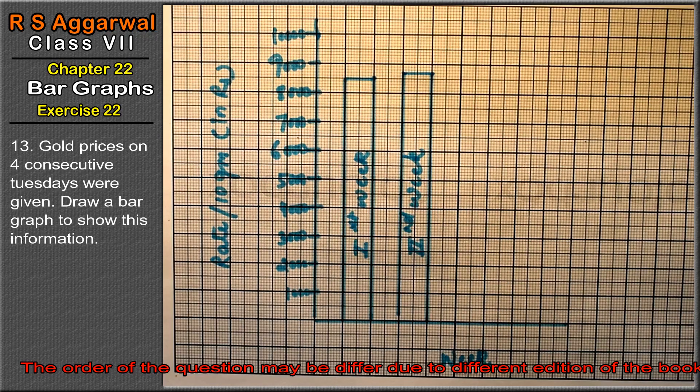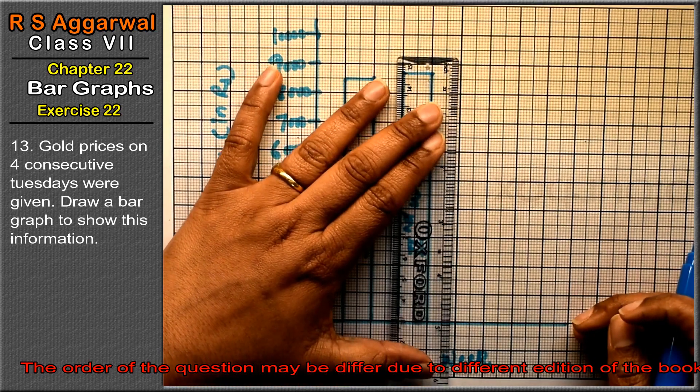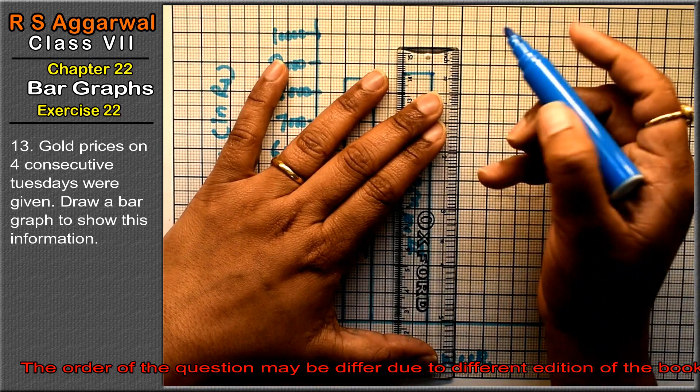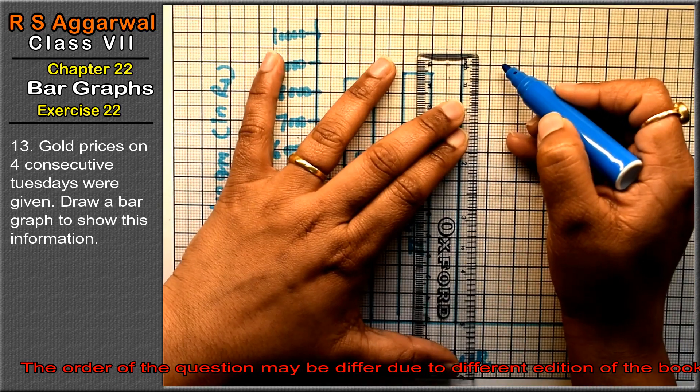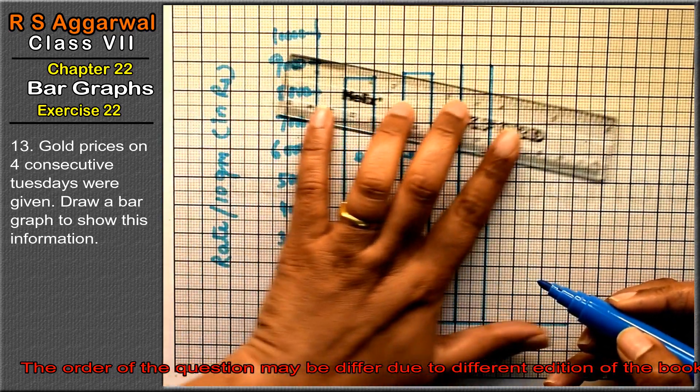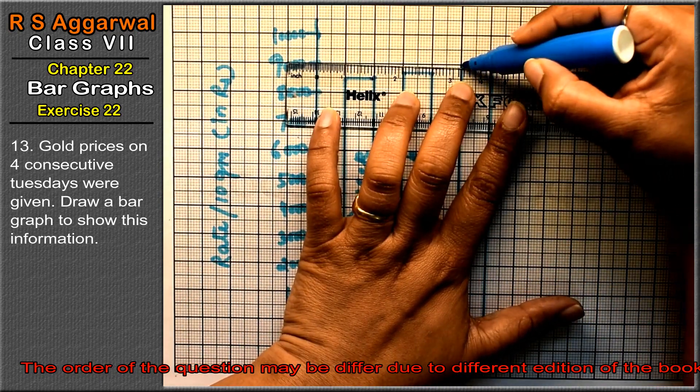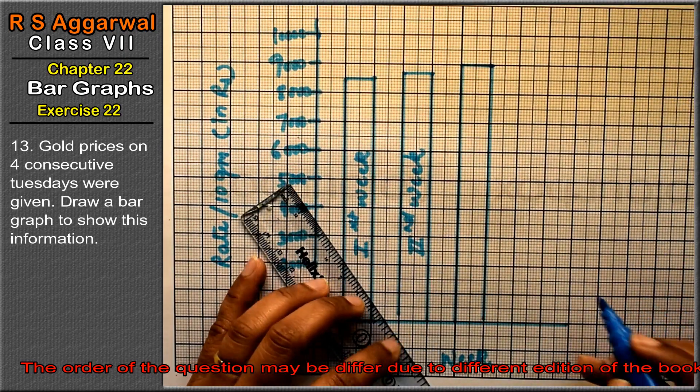Next is 90.5, so 90 and then a little bit up but it should not come to 91. Third week.